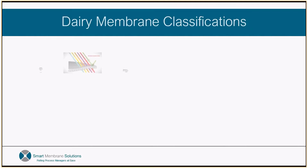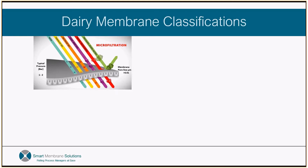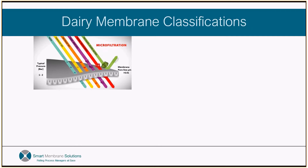First up, we have microfiltration. Microfiltration has the largest membrane pore size used within the industry. MF typically allows particles greater than 0.2 microns to be rejected by the membrane. Due to the open pore structure, system pressures within an MF plant to drive the separation process and extract permeate are low, typically in the 1 to 2 bar range, which is 15 to 30 psi.